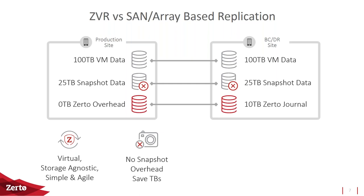That 10% on the recovery site varies depending on how long you keep a journal for each virtual machine — from one hour up to 30 days. How much rate of change you have determines how much it grows, but there are built-in features to keep it even smaller. This number might look too small to believe, but it's actually pretty true across the board for Zerto customers. The journal characteristics, space savings, and bandwidth savings are all significant advantages.